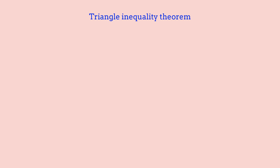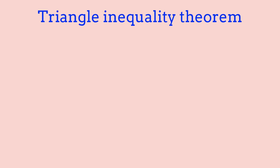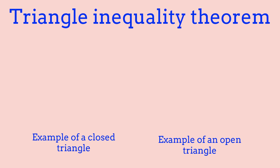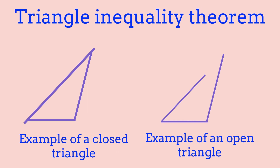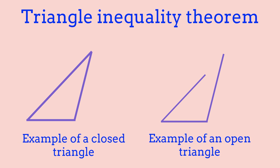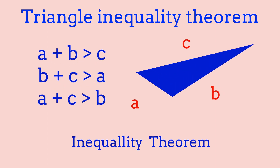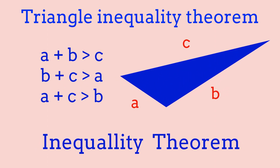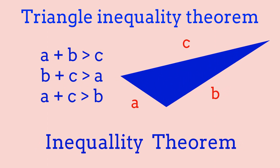There is one more thing to go over: the triangle inequality theorem. When choosing values for A, B, and C, the triangle must be closed. If the triangle is open, our program will not be able to give the area. The inequality theorem states that the sum of any two sides must be greater than the third side — so A plus B must be greater than C, and B plus C must be greater than A. Now let's get on with the Python code.